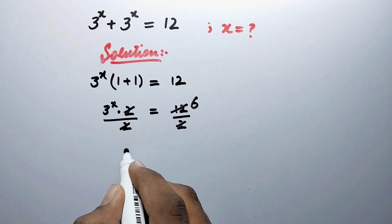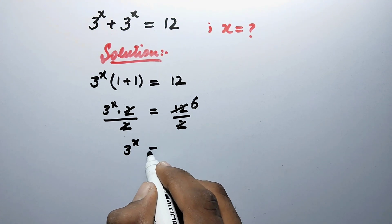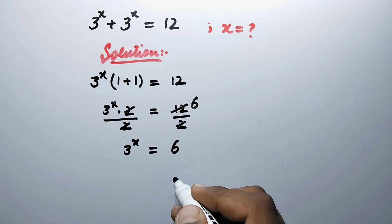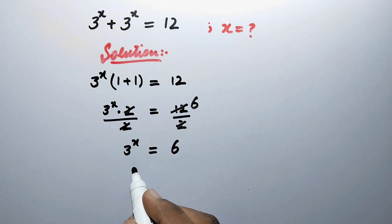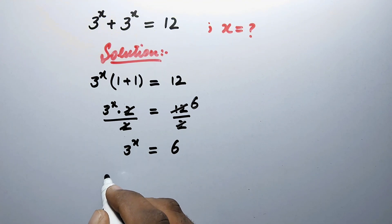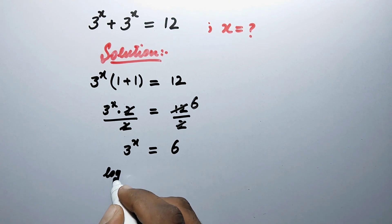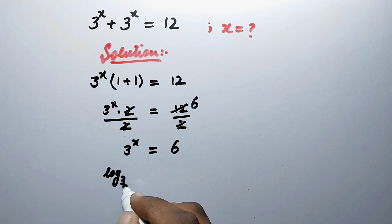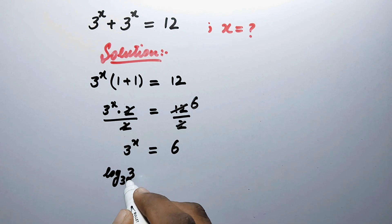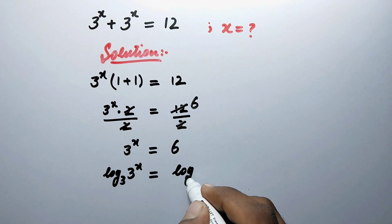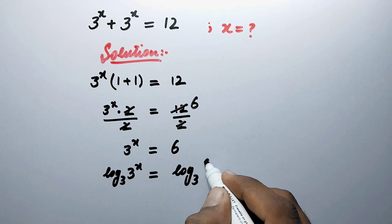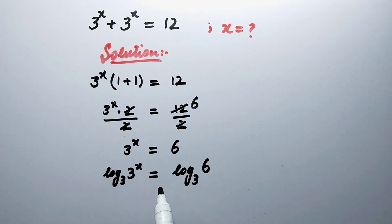So now the remaining equation is 3 to the power x is equal to 6. Next, we will take log to base 3 on both sides of the equation. Therefore it will be log to base 3 of 3 to the power x, equal to log to base 3 of 6.